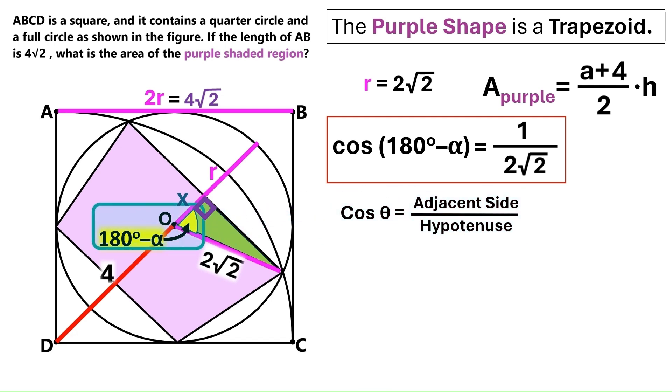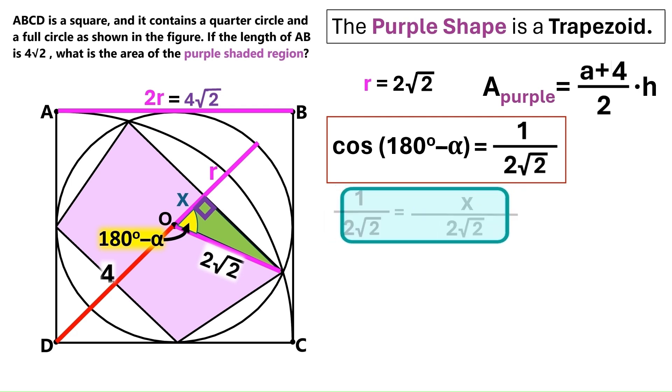Our angle is 180 minus alpha. And we know that its cosine is 1 over 2 times root 2. So we can replace this with that. And the side that is adjacent to the angle is x. So let's change this to x. And finally, the hypotenuse is 2 times radical 2. So let's change this to that. And it is clear from this equation that x is 1. And we can change this x to 1.